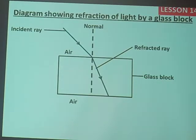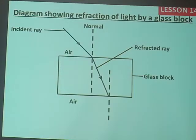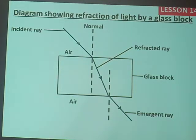Because this glass block is transparent, this refracted ray has to go through it. But remember, at the bottom of the glass block, we also have air surrounding it. Now because the light ray is moving from the glass block back into air, it is going to be refracted away from the normal. That is what we call the emergent ray. That diagram illustrates reflection of light by a glass block.